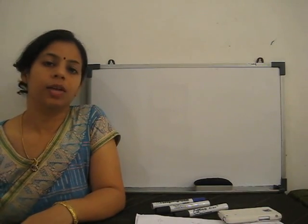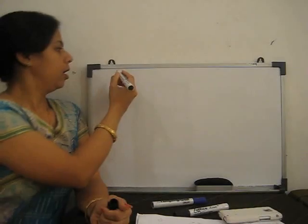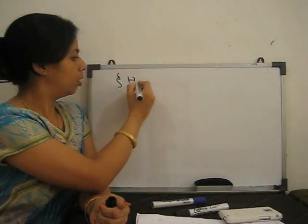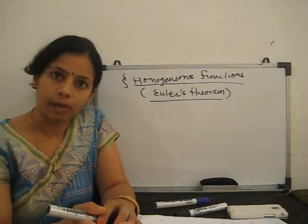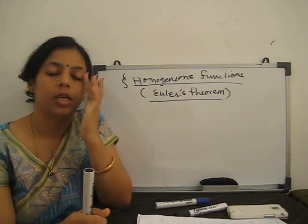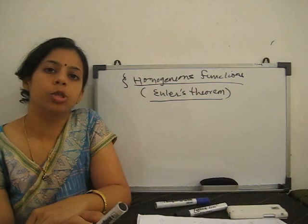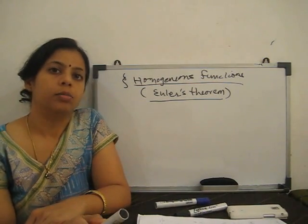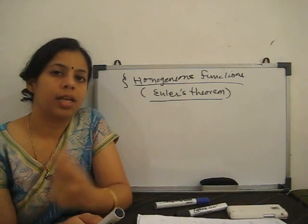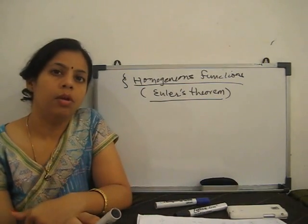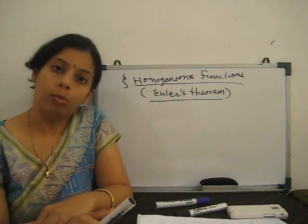Hello and welcome to our new video where we discuss homogeneous functions and Euler's theorem. First, we discuss what homogeneous functions are. A homogeneous function has all terms with like powers — if it has three terms, each term has the same degree or same power. That is called a homogeneous function.